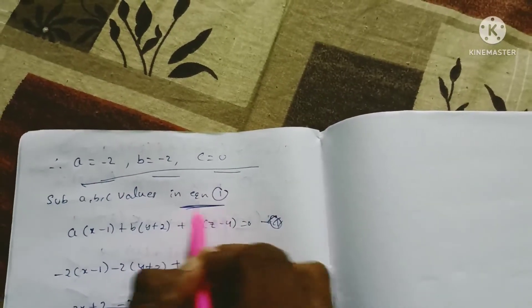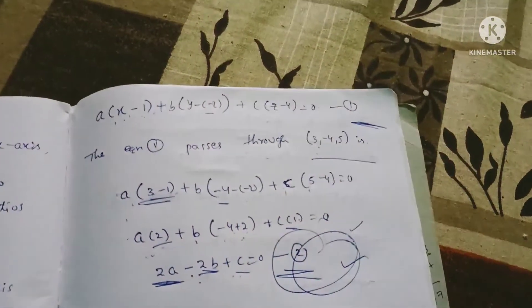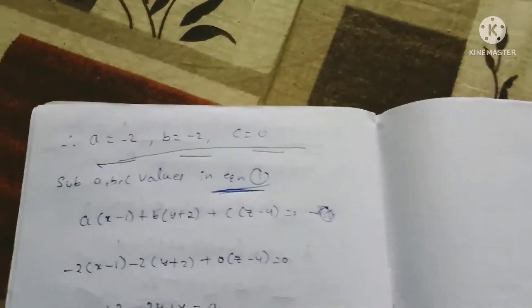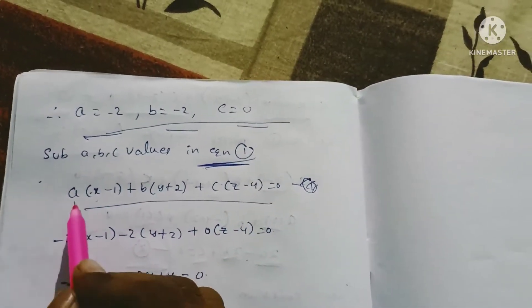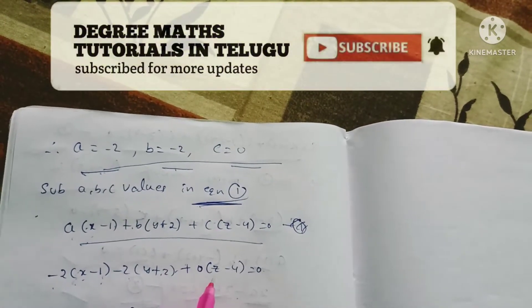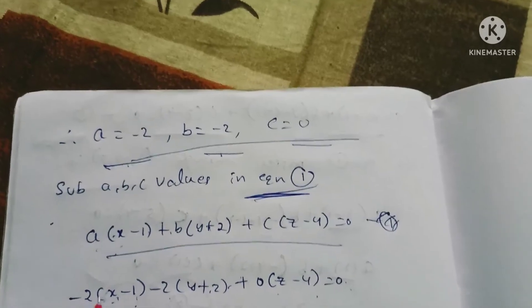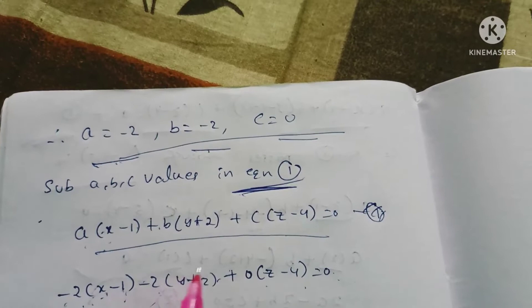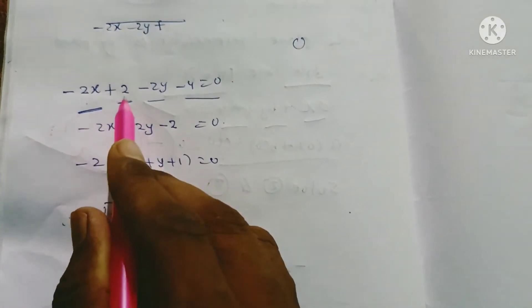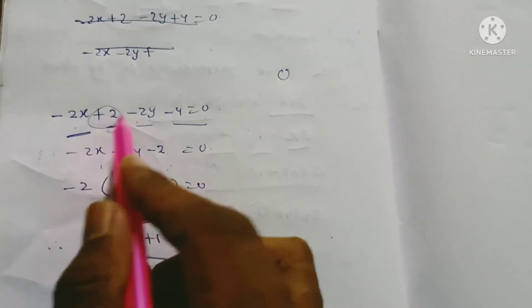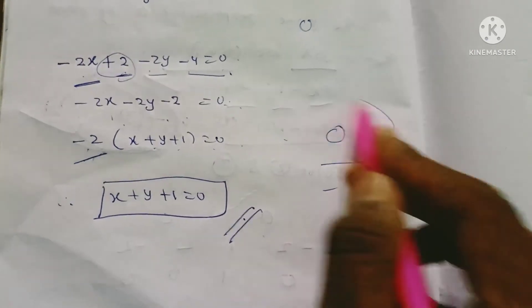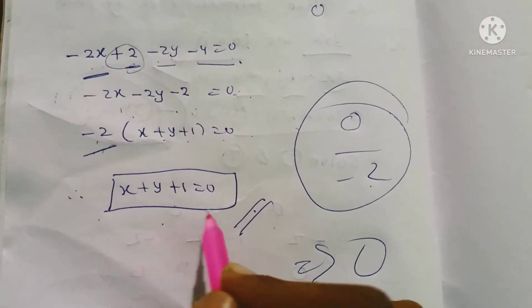Substituting a = −2, b = −2, c = 0 into equation 1: −2(x − 1) + (−2)(y + 2) + 0(z − 4) = 0. Expanding: −2x + 2 − 2y − 4 = 0, giving −2x − 2y − 2 = 0. Taking −2 as common factor: −2(x + y + 1) = 0. Therefore, the equation of the plane is x + y + 1 = 0.